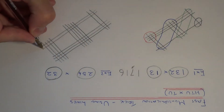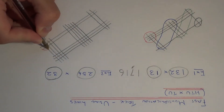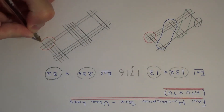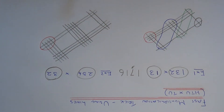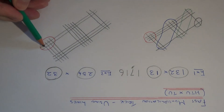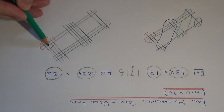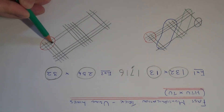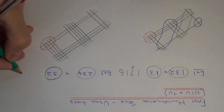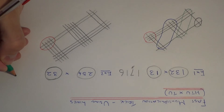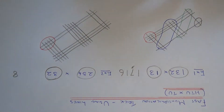So we just need to now count the intersections that we have. We need to begin here. So we have one, two, three, four, five, six, seven, eight. So this will be the last digit of our answer.